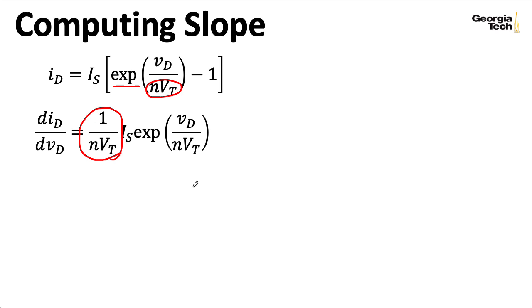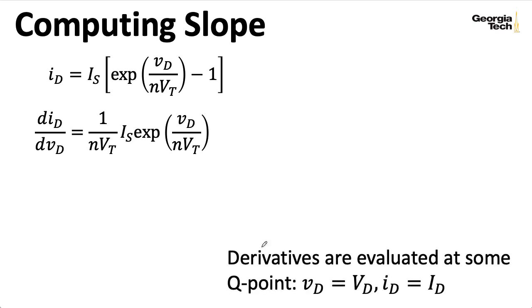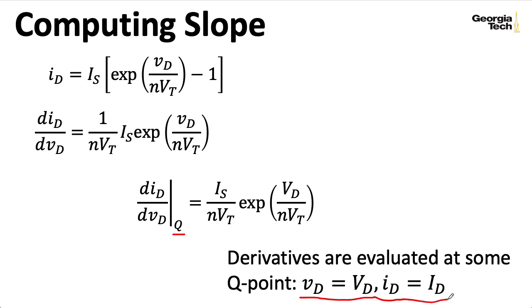We're going to want to evaluate this derivative at the q point, the quiescent point, our operating point. So we're going to plug in little v, capital sub d, equal big v, big d, and little i, big sub d, equals big i, big sub d. Okay, that's a lot easier to look at than it is to say. So I'm going to write this by saying we'll evaluate it at this magical letter q. And the q indicates these kinds of replacements.